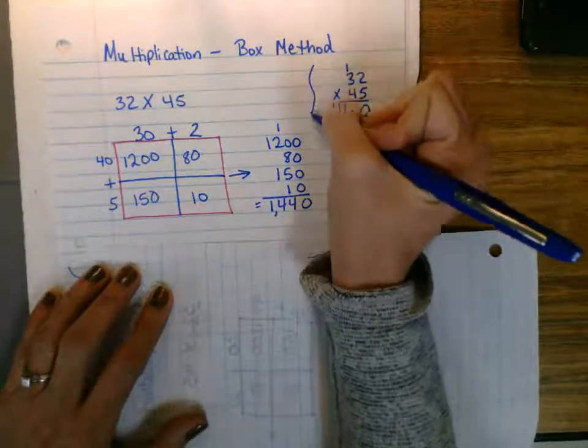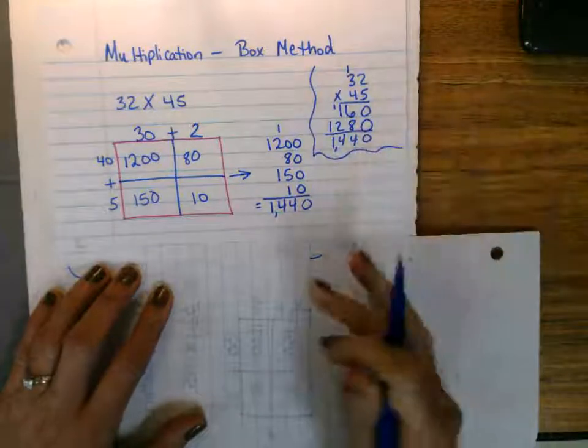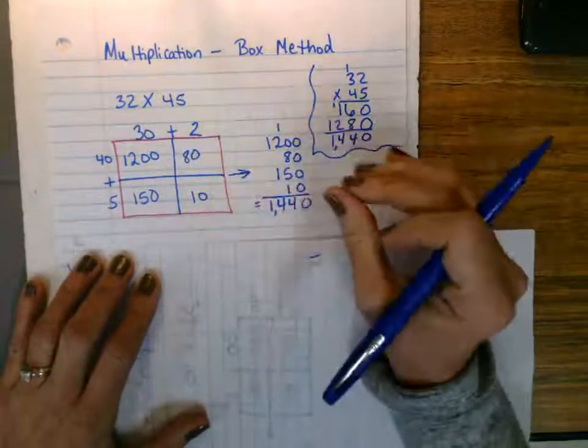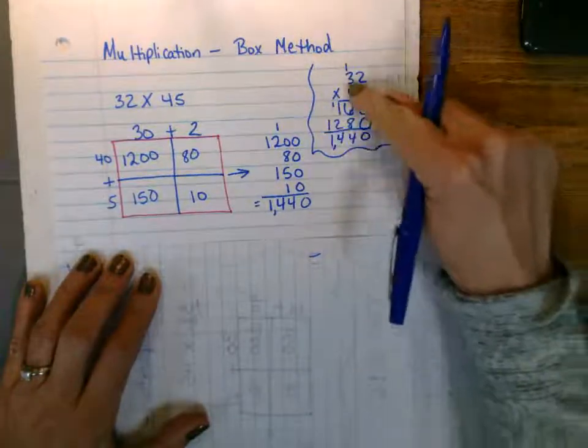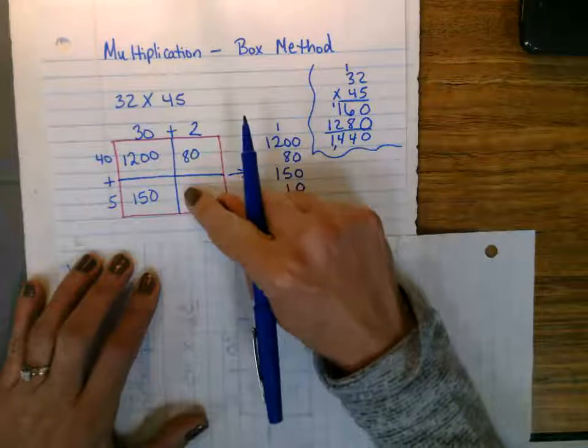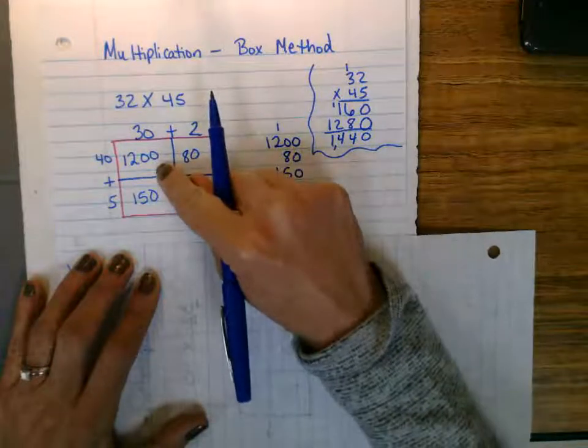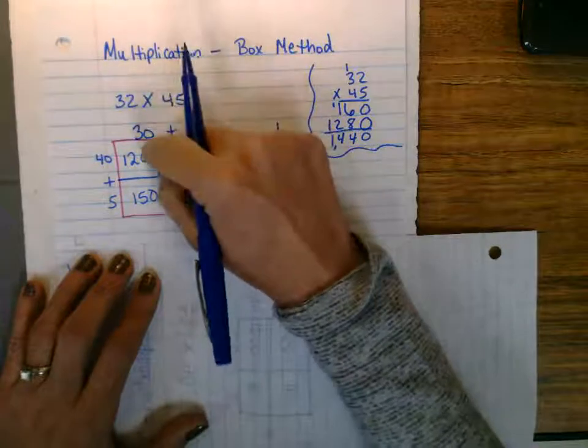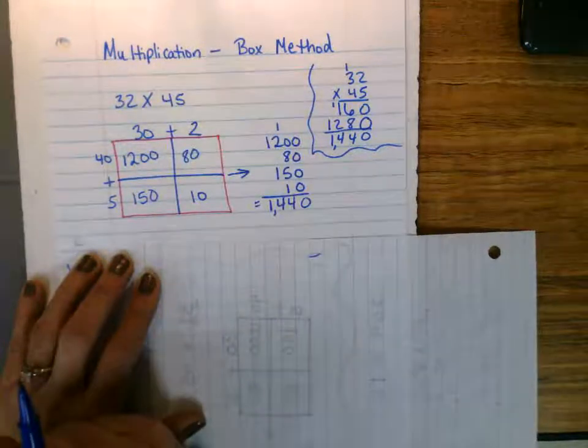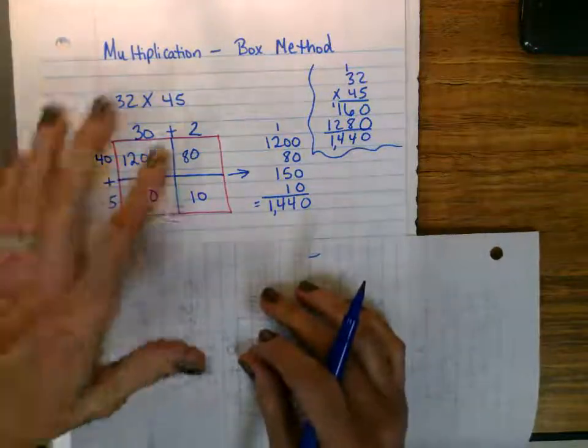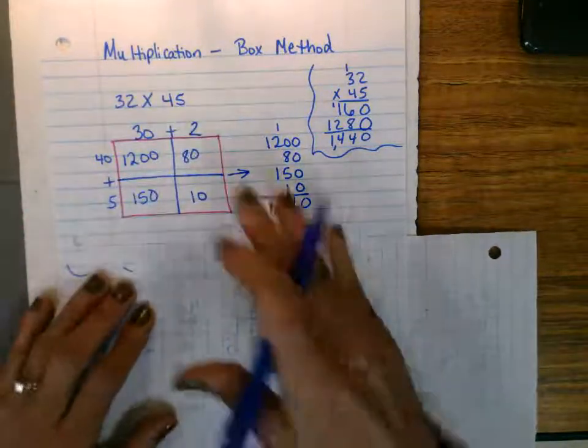So in my opinion, take it or leave it, I just feel like box method, although different, and it may make you feel uncomfortable than the traditional, really breaks the numbers apart. Kids can say, oh, the 3 and the 4, which is a 30 and a 40, can be multiplied together to get 1,200. Okay, so it just makes more sense. So we've just kind of decided this is our focus.